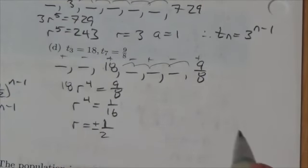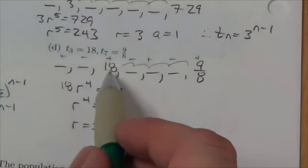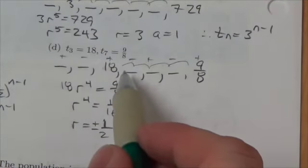So, regardless, r is a half. The numeric value is a half, whether it's positive or negative. If you go backwards from that, it's like multiplying by 2.